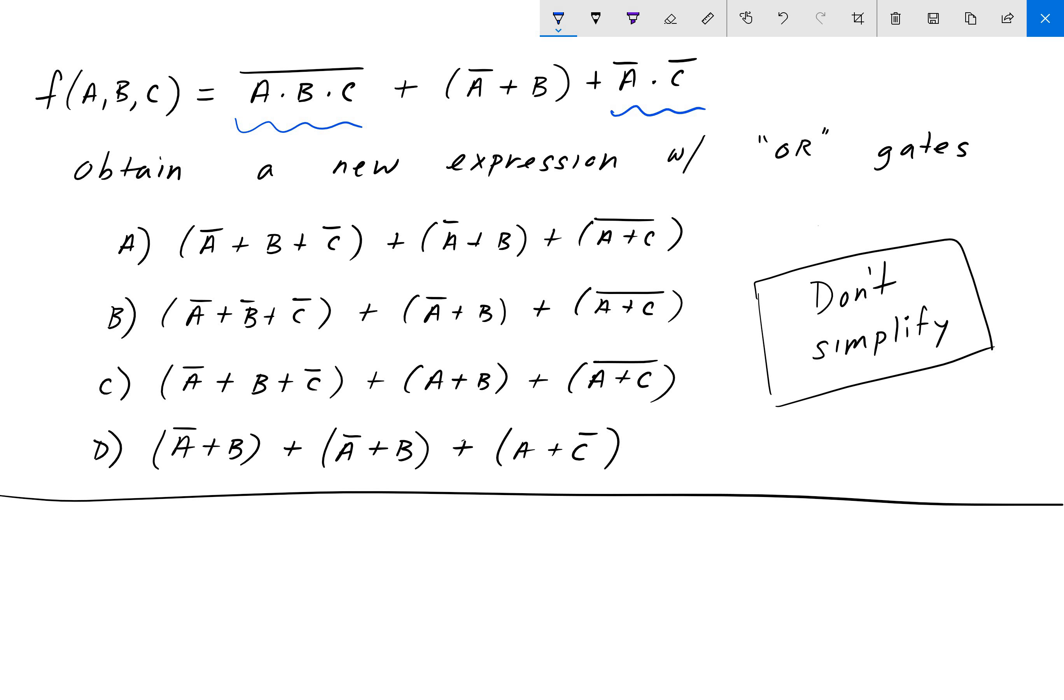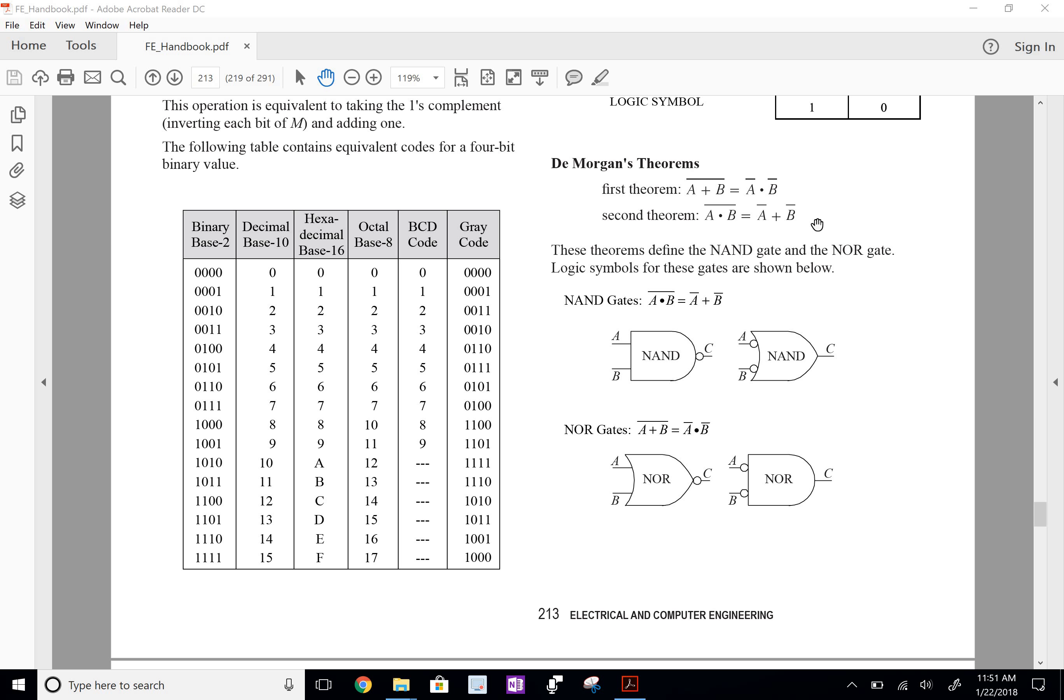So I'm going to copy DeMorgan's laws down here. Let's say we have this first theorem here is (A plus B)' is equal to A' times B'. So that will help us with the third term and the second theorem will help us with the first term of our expression.